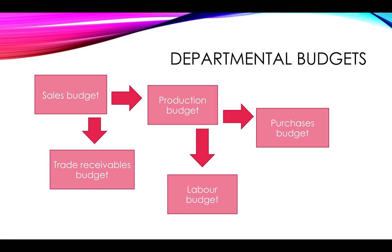From the production budget, you can then determine your labor budget and your purchases budget. Your labor budget will need to help you figure out how many labor hours are needed in order to achieve the set production, which will also involve possibly deciding how many workers you need. Maybe you don't have enough labor hours and need to either employ more people or include overtime. This may also involve additional costs of hiring workers or overtime expenses, and this will all go into the labor budget.